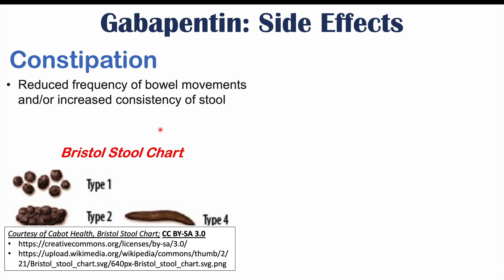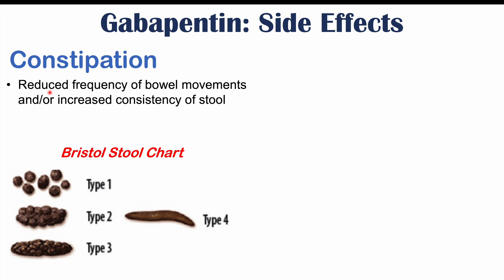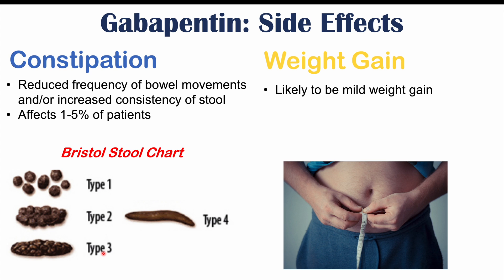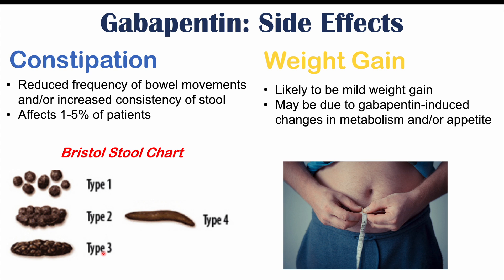Constipation — reduced frequency of bowel movements and/or increased consistency of stool — is another side effect. Referring to the Bristol stool chart, types 1, 2, and 3 represent constipation, where stool becomes very hard and firm or bowel movements become less frequent. This is estimated to affect 1 to 5% of patients. Weight gain may also occur, usually mild, due to gabapentin-induced changes in metabolism and/or appetite, also in 1 to 5% of patients.